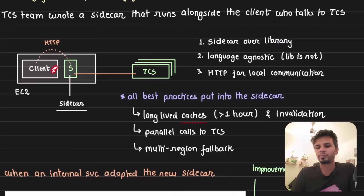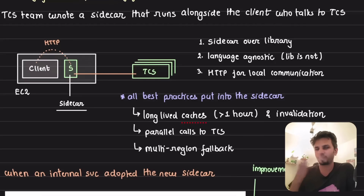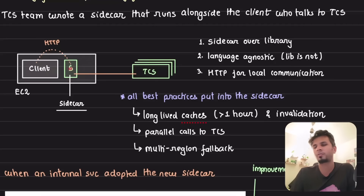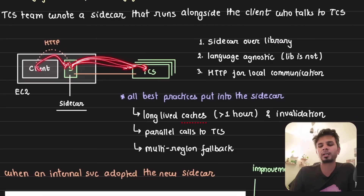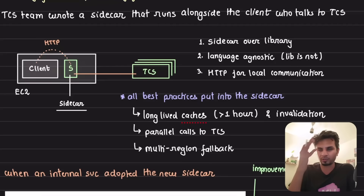Why a sidecar over a library? If the TCS team had written a library, it would need to be written in each language — Go, Java, Rust, and so on — making it complicated and hard to maintain. Instead, with a sidecar, your service just makes a simple HTTP call, and the sidecar handles all retries, failures, parallelization, and best practices. They chose sidecar over library to be language-agnostic, with communication done over local HTTP.